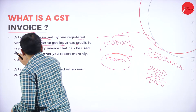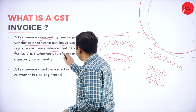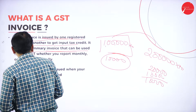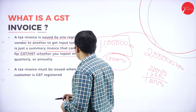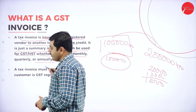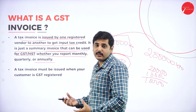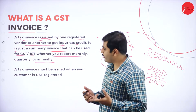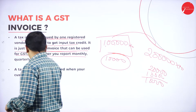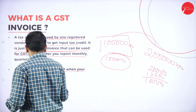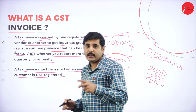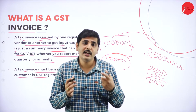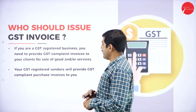It is just a summary of invoice that can be used for GST and HST whether you report monthly, quarterly or annually. Reporting to the government or tax authority may be monthly, annually or quarterly — all invoices and documents should be produced. A tax invoice must be issued when your customer is GST registered. If the customer is a registered person, then only we can issue the tax invoice; otherwise we cannot issue the tax invoice.